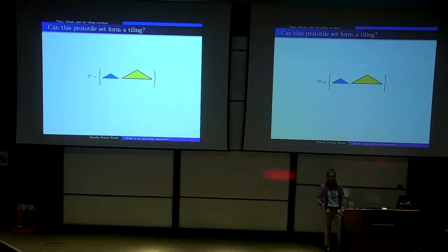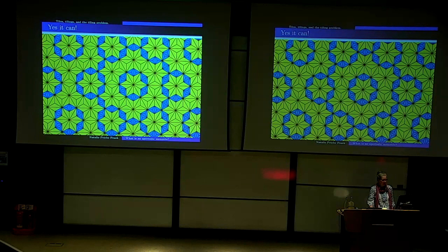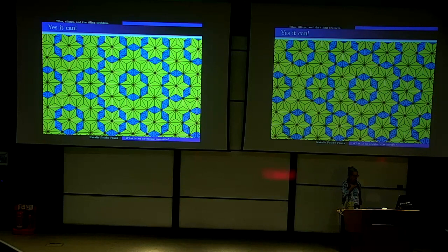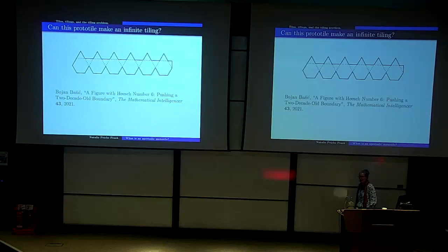Can this prototile set form a tiling? The answer is again yes. Here's an example of a tiling that's not obviously periodic — it's got these rings of blue tiles, with larger rings interconnected with smaller ones. In the infinite tiling, I know from my construction method that this particular tiling will not be periodic, because arbitrarily large rings will form and that precludes the possibility of any periodicity. But now the problem gets hard.